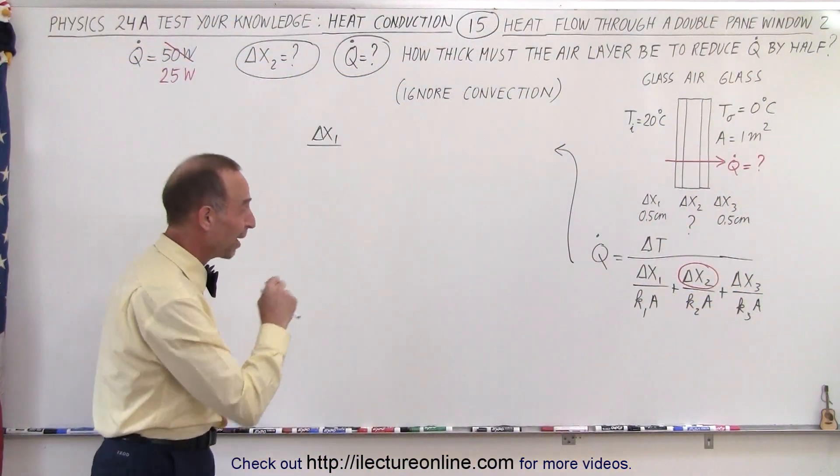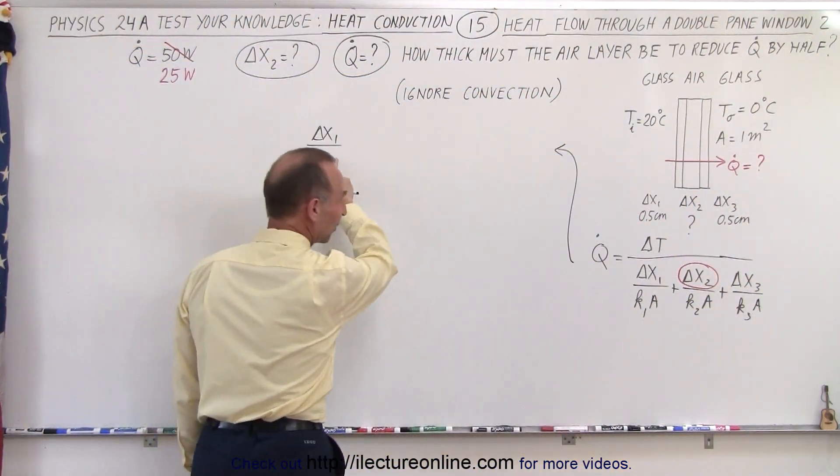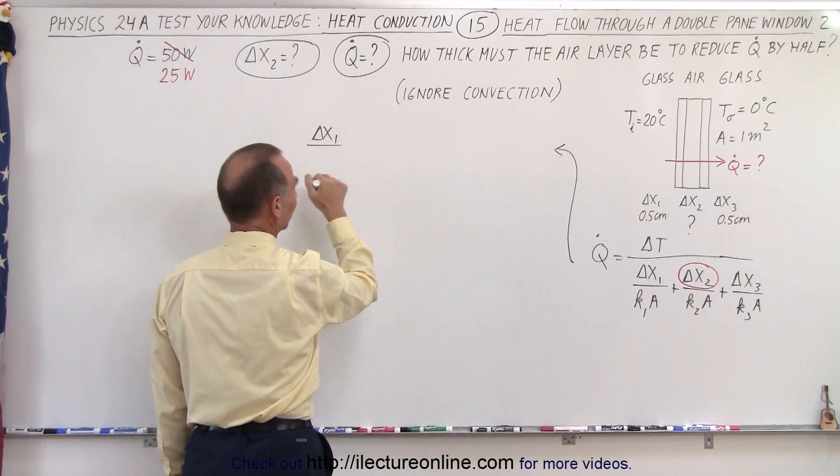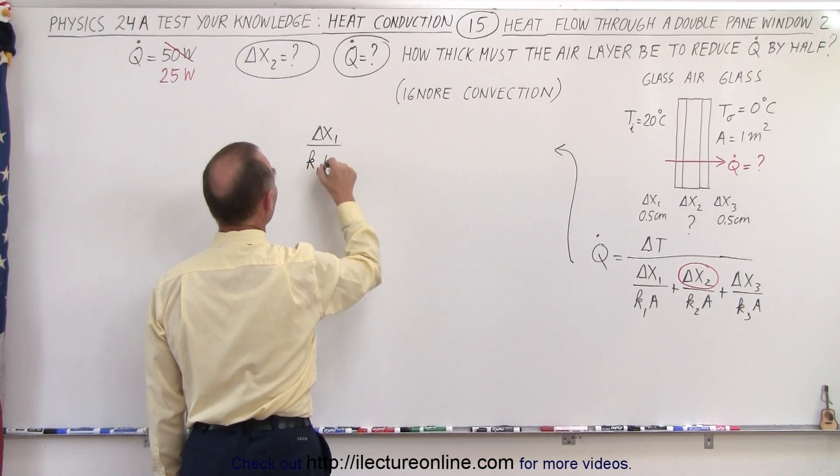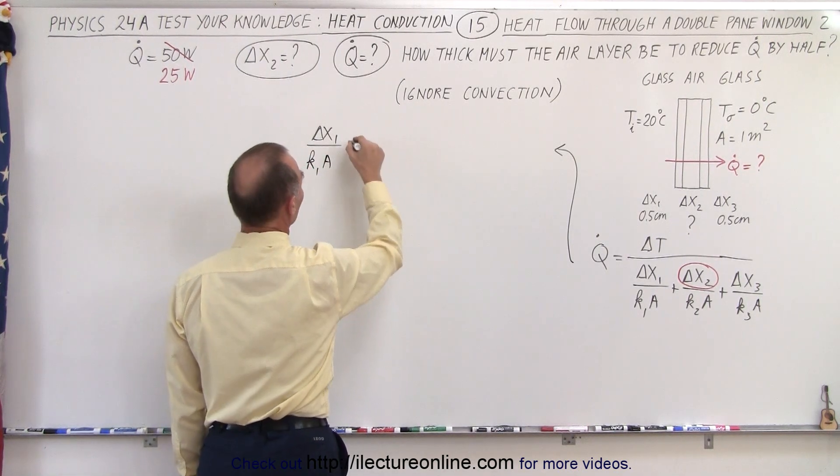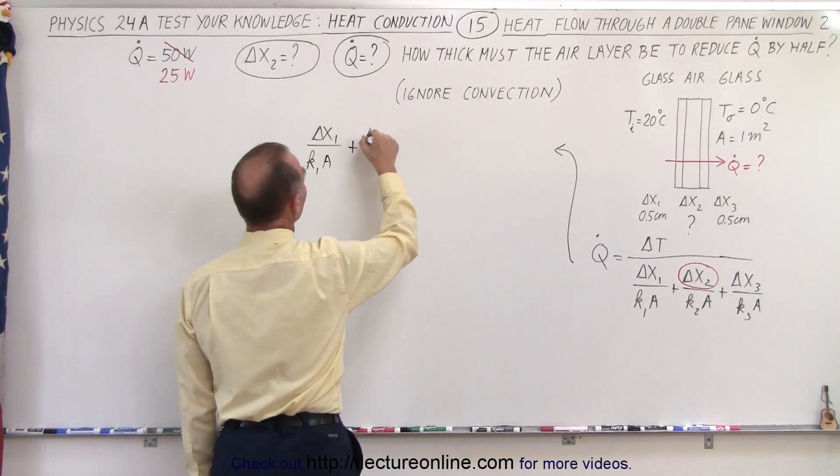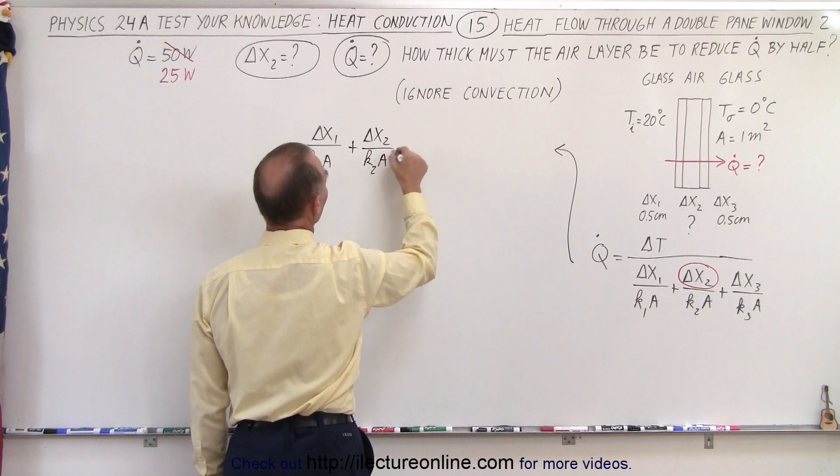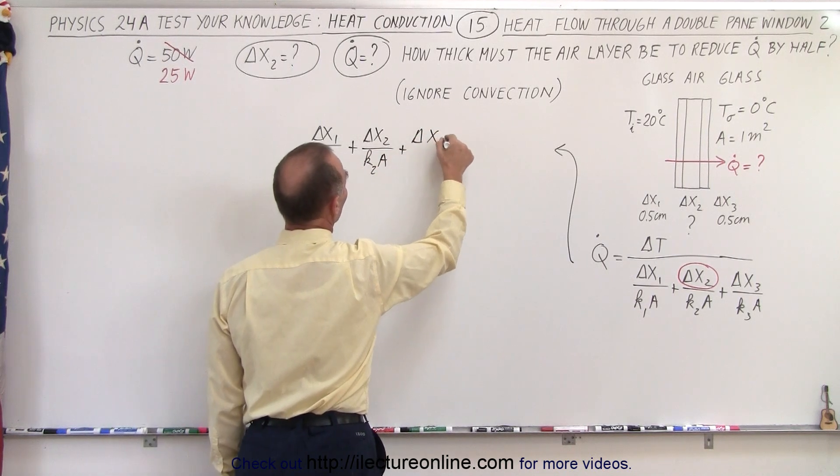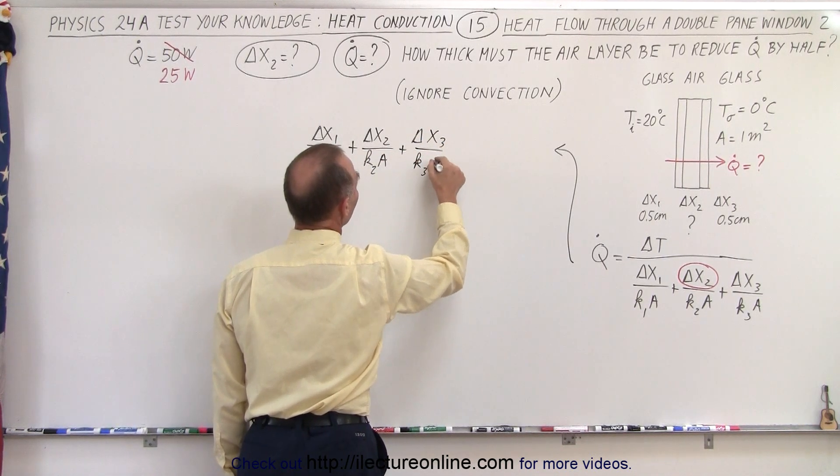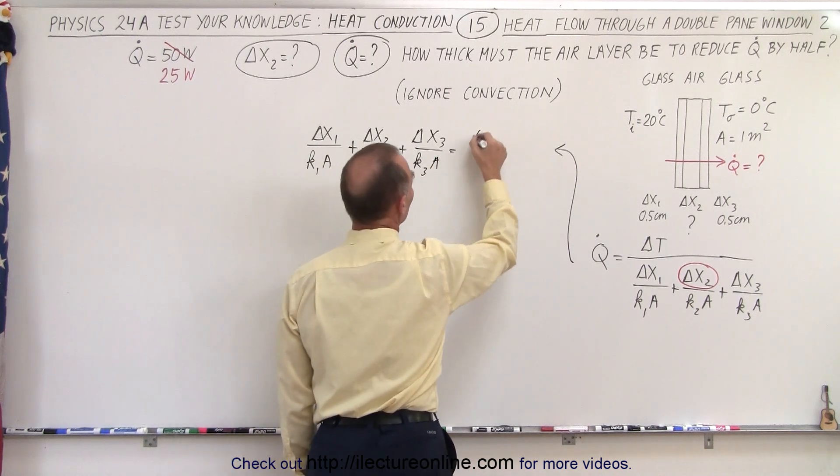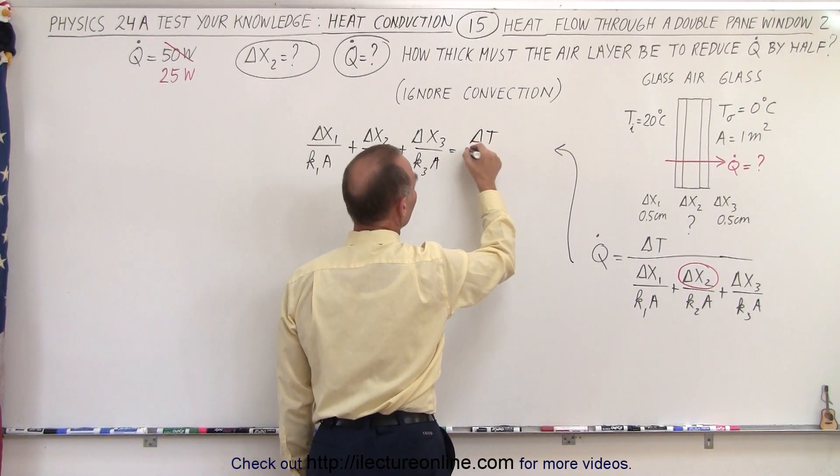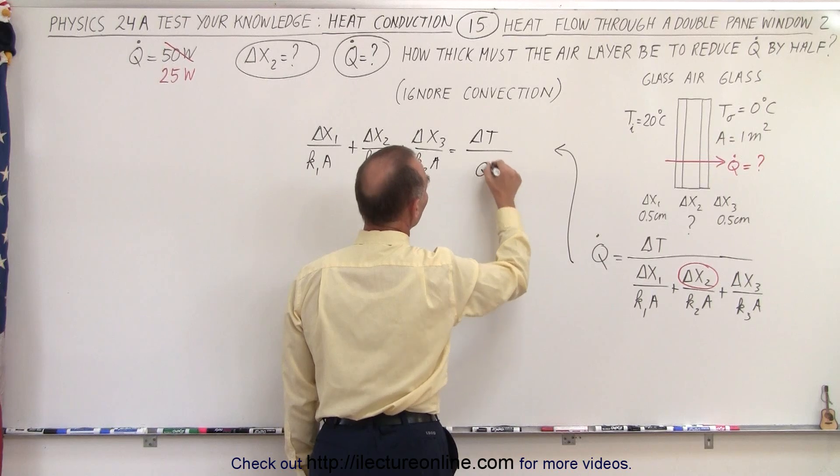Okay, let's continue with our problem here. So we're cross multiplying. So on the left side, we end up delta x1 times k1a. Notice that the cross section areas are the same for all. So we need delta x2 divided by k2a plus delta x3 divided by k3a. And that must equal the difference in the temperature between the inside and the outside and the heat flow.